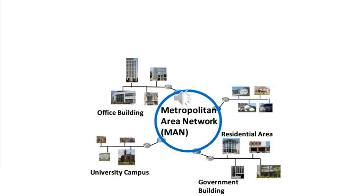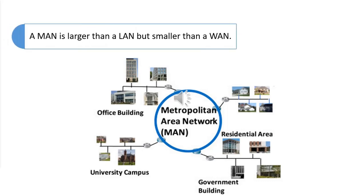Next, we will talk about Metropolitan Area Network. A MAN is larger than a LAN but smaller than a WAN. This is the type of computer network that connects computers over a geographical distance through a shared communication path over a city, town, or metropolitan area. Examples of MAN are networking in towns, cities, a single large city, large area within multiple buildings, etc.